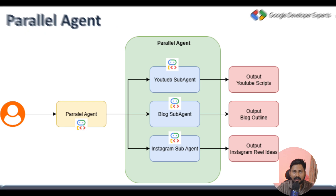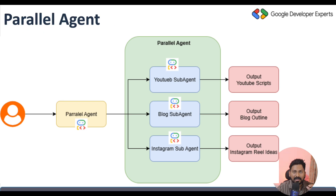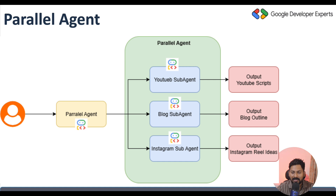The parallel agent is where sequence doesn't matter. In our demo we'll create a multi-agent content creation system. You type a prompt like 'create content for Google ADK' and it invokes three parallel agents: the first generates a LinkedIn post script, the second creates Instagram post content, and the third creates YouTube post content. All three run in parallel, so you get three separate outputs, one from each agent simultaneously.